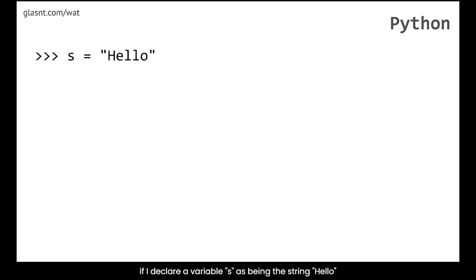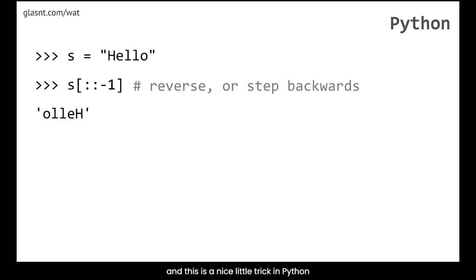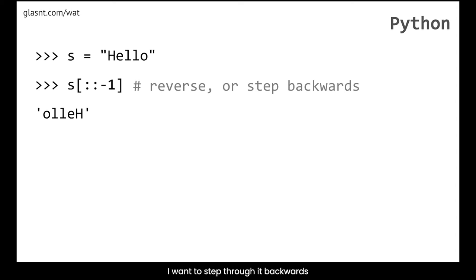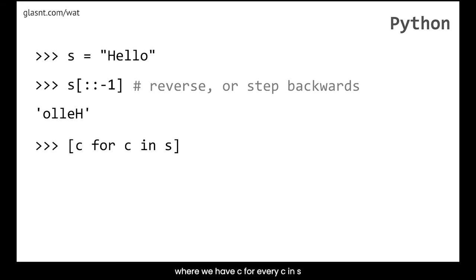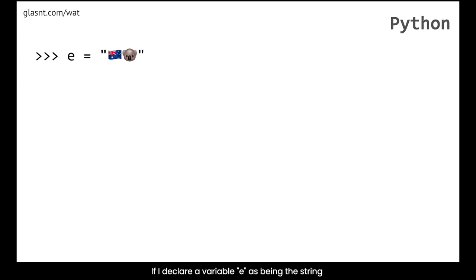In Python, if I declare a variable S as the string 'hello' and then ask for the reverse of that, I get the string 'olleh'. This is a nice trick in Python where you can say: give me all the bits of this string and step through them in reverse order. You can also do list comprehension — 'c for every c in S' — to get each character h, e, l, l, o, showing how you'd go o, l, l, e, h to get the reverse.